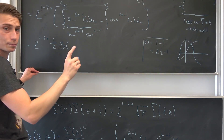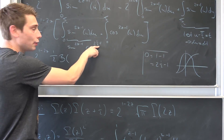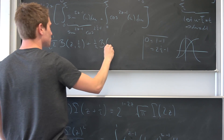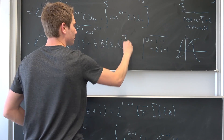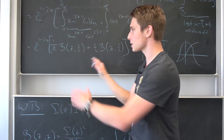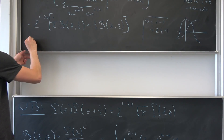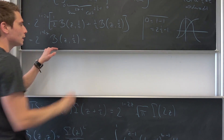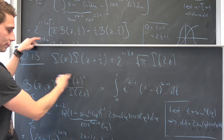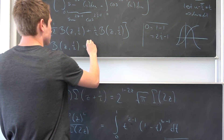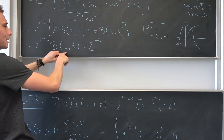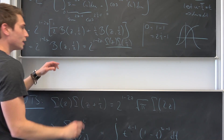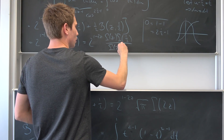Plus one-half times Beta of z comma one-half, which together just makes Beta of z comma one-half. So this is 2 to the 1 minus 2z power times Beta of z comma one-half. The beta function is defined as Gamma of z times Gamma of one-half over Gamma of z plus one-half, giving us 2 to the 1 minus 2z power times Gamma of z times Gamma of one-half over Gamma of z plus one-half.